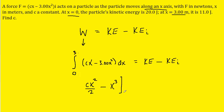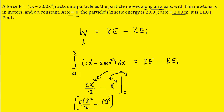Our limits of integration are from zero to three. The laws of calculus require us to plug the upper limit in for x first, so we would have c multiplied by three squared over two, minus three cubed. We then plug in the lower limit. Since the lower limit is zero, both terms become zero, so when we subtract that quantity of zero, it's negligible — we don't even have to write it in.